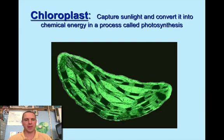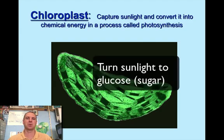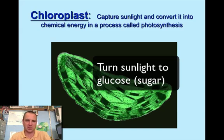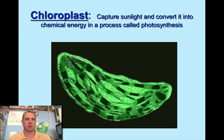Plants, on the other hand, have chloroplasts. Chloroplasts are unique because they allow an organism to be an autotroph — to capture sunlight energy and turn it into a tangible energy source, like glucose. So chloroplasts take sunlight and convert it into chemical energy, or convert it into glucose.